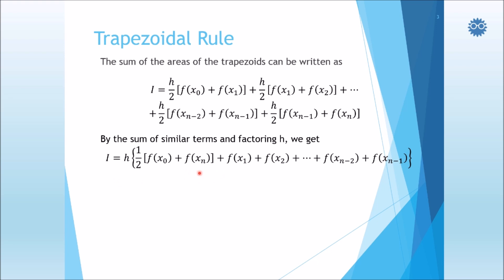So here we sum the similar values which are multiplied by h, but here we have two terms, which is the first term at the lower limit of integration and the last term at the upper limit of integration. They are summed together, and then this formula is obtained.